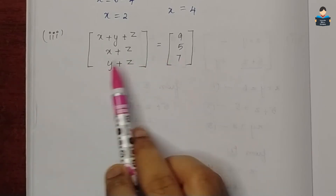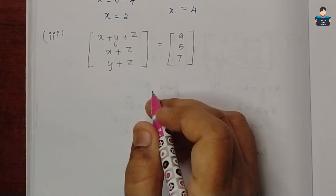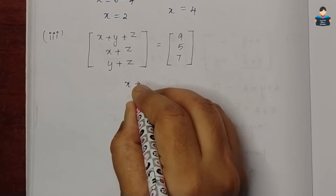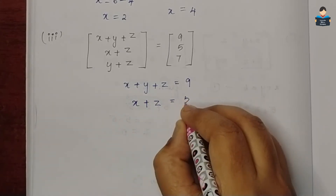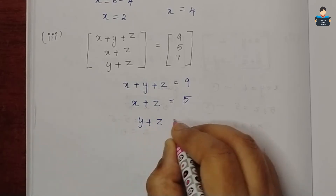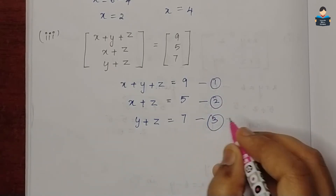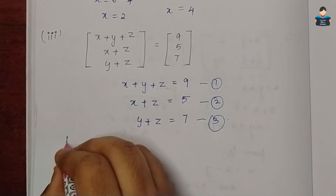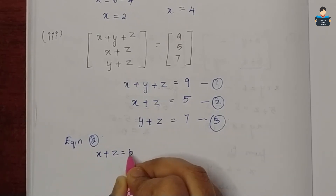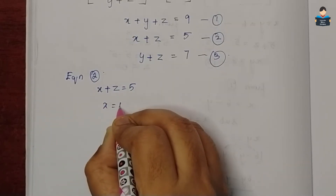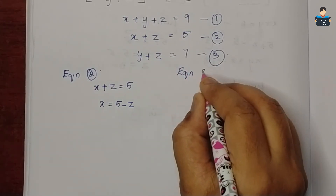Now the third subdivision. By the equality of matrices, corresponding elements will also be equal. So we get three equations: x plus y plus z is equal to 9 (equation 1), x plus z is equal to 5 (equation 2), and y plus z is equal to 7 (equation 3). From equation 2, x is equal to 5 minus z.